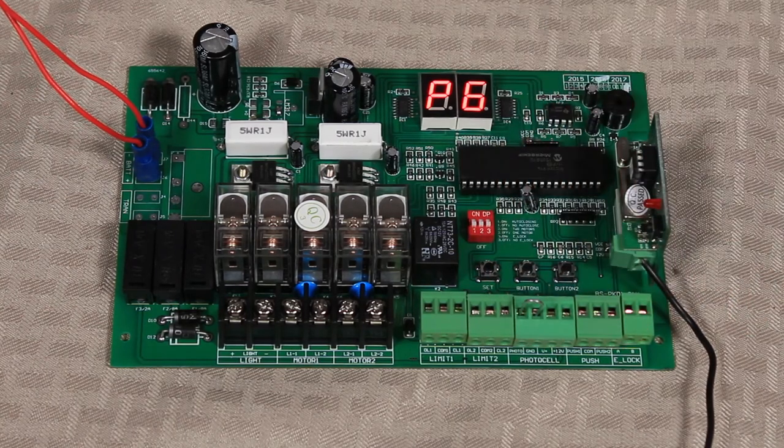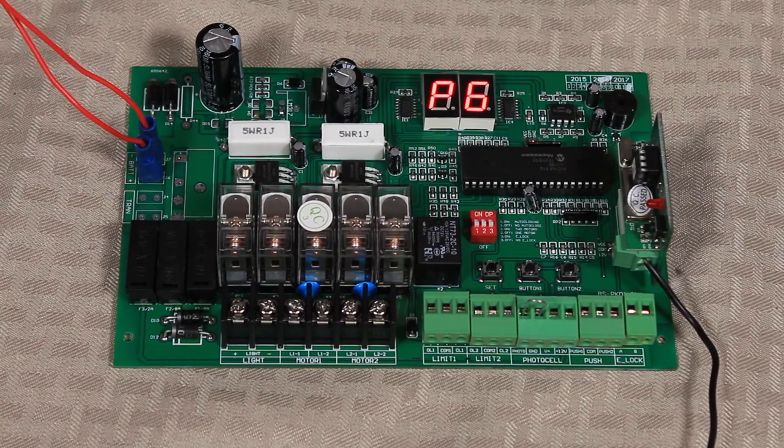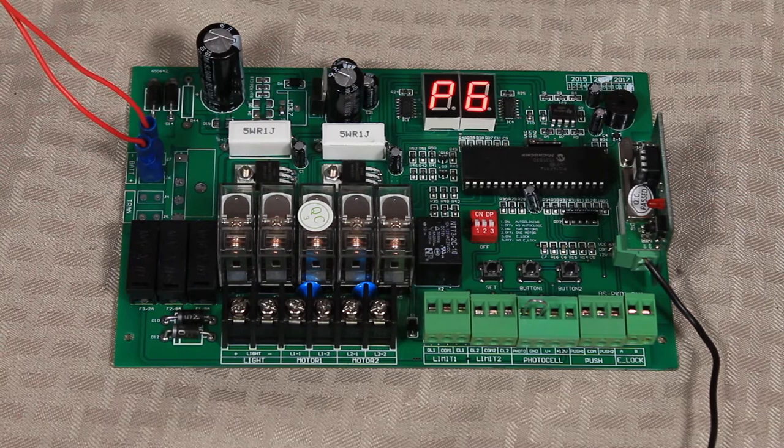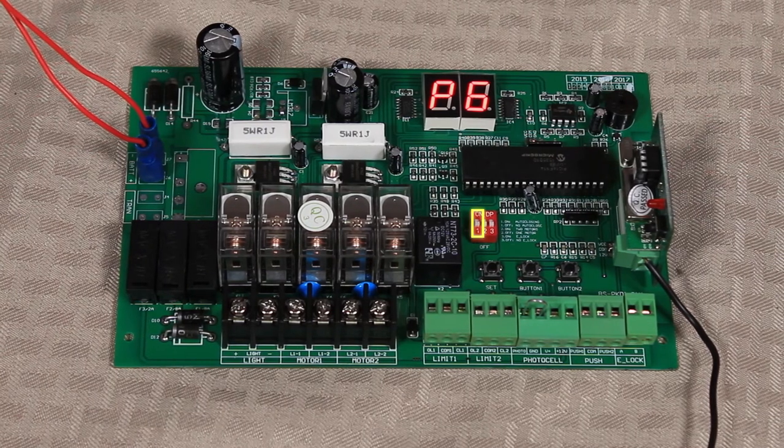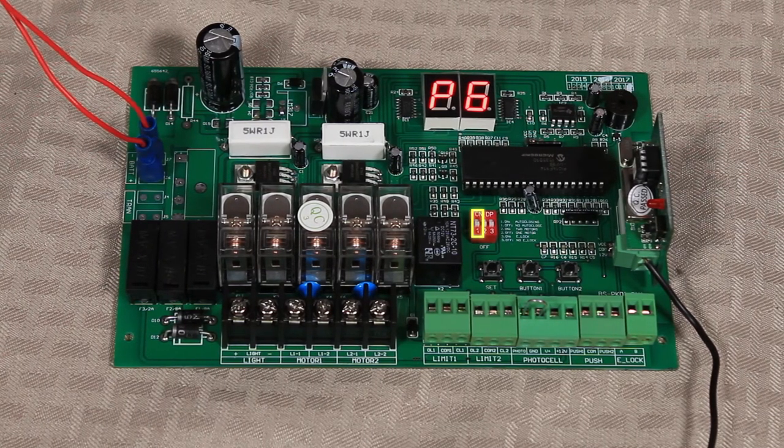I'm going to go to P6, which is the last setting of all the parameters. P6 is the auto reclose time. If you have that first dip switch in the up position, P6 will be active.